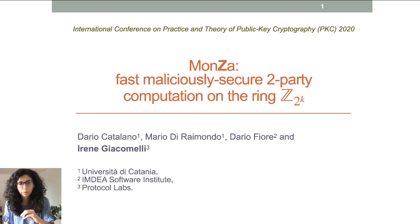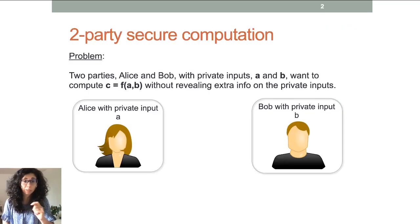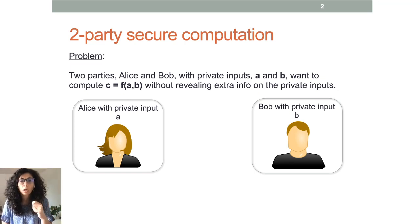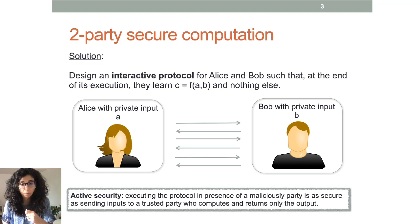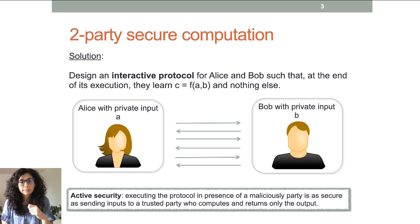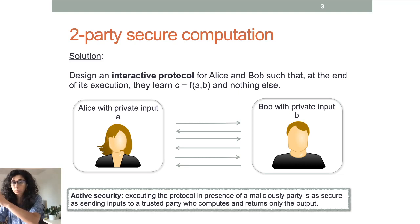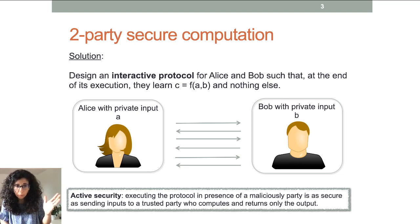We look at this problem: we have two parties, Alice and Bob, with private inputs A and B, and want to compute a public function F over these inputs without revealing the inputs. We solve this by designing an interactive protocol for Alice and Bob such that even if one party is corrupted, the protocol stays as secure as sending inputs to a trusted party that computes the output and returns only this to Alice and Bob. This is the standard MPC problem, just for the specific case of two parties.